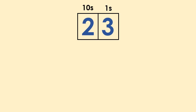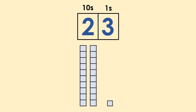For example, in 23, there are two tens and three ones. So we can imagine it like this: two groups of ten and three ones.